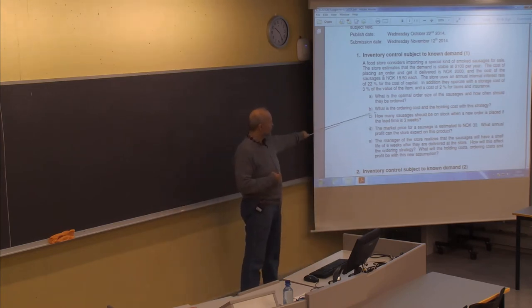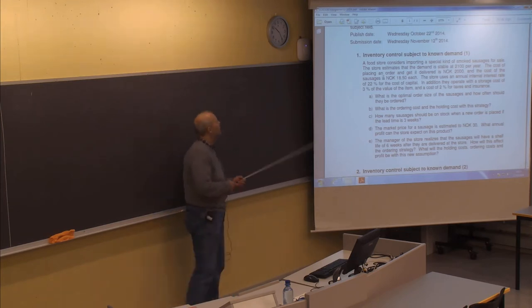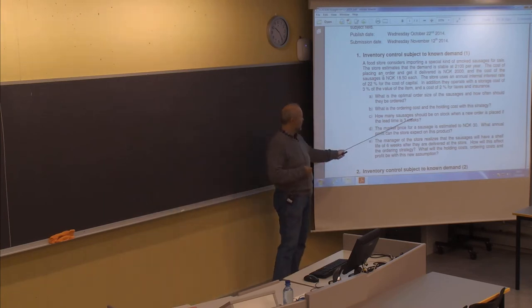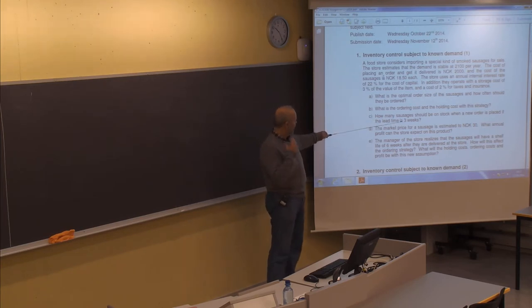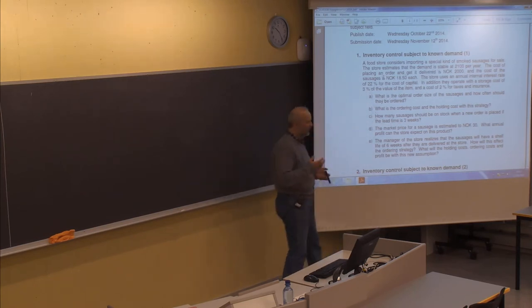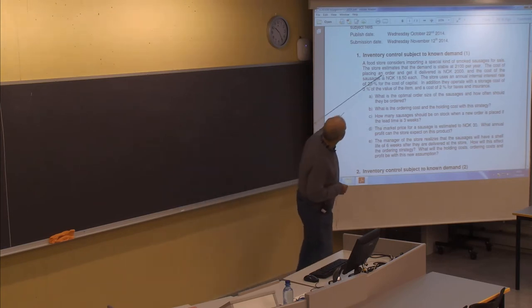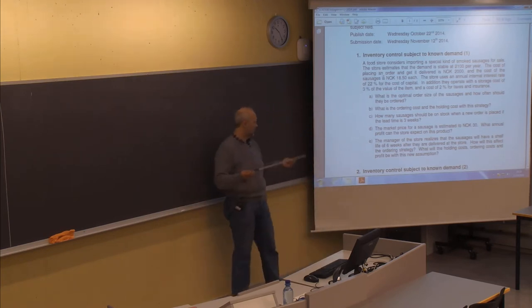On part C, you have a lead time of three weeks. How many sausages should be on stock when a new order is placed? You need to find the demand during the lead time: take the annual demand and multiply by the fraction of the year, which in this case is three weeks. If not stated otherwise, you should use 52 weeks.